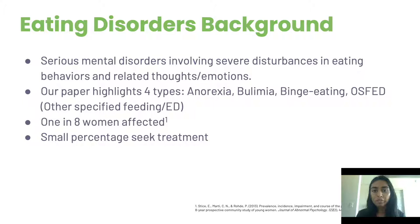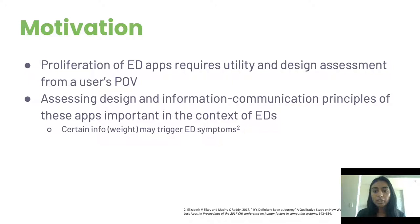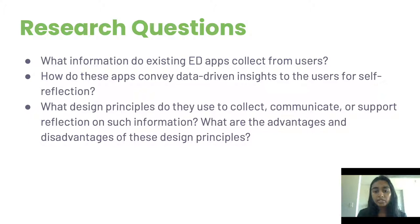Today, mobile health apps provide promising means for managing their condition. As more of these apps emerge, they need to be assessed from a user's perspective to ensure they are providing legitimate, valuable information. This angle is critical because of the sensitive nature of certain data — for example, displaying anything that draws attention to weight or calories may trigger ED symptoms or exacerbate their condition. Our review addresses this need by understanding if ED apps collect, communicate, and support reflection on information effectively and safely.